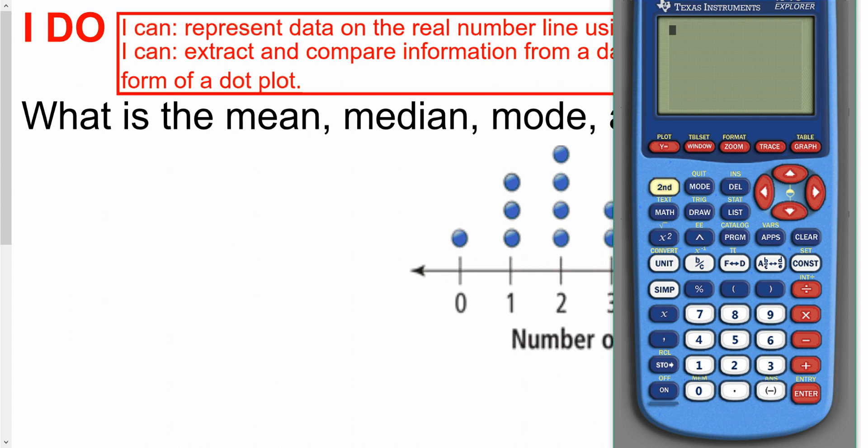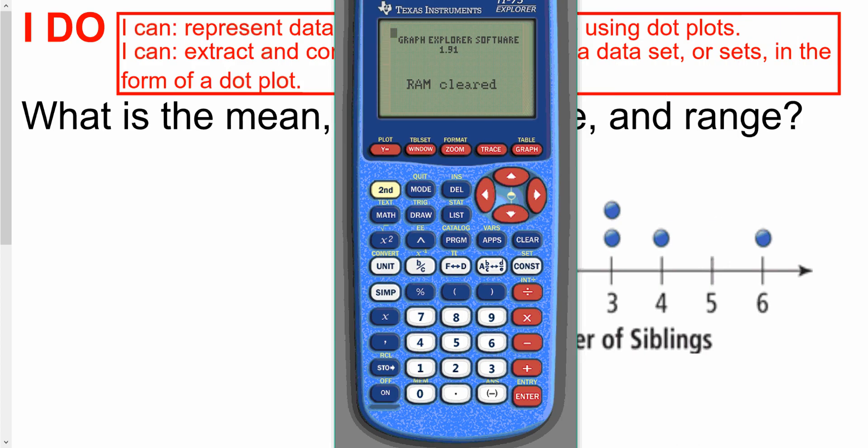All right, got our calculator here. Make sure we're resetting those. If you don't remember how, it's second, zero, and then we're going to choose option seven, then one, and then two. All right, I'm going to move this over here.